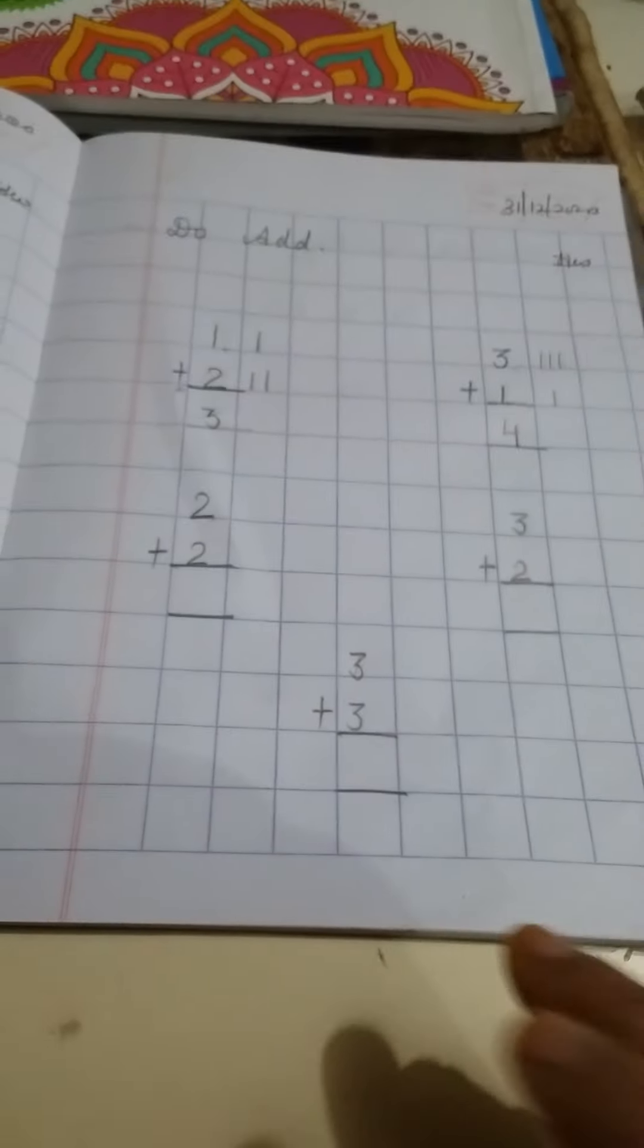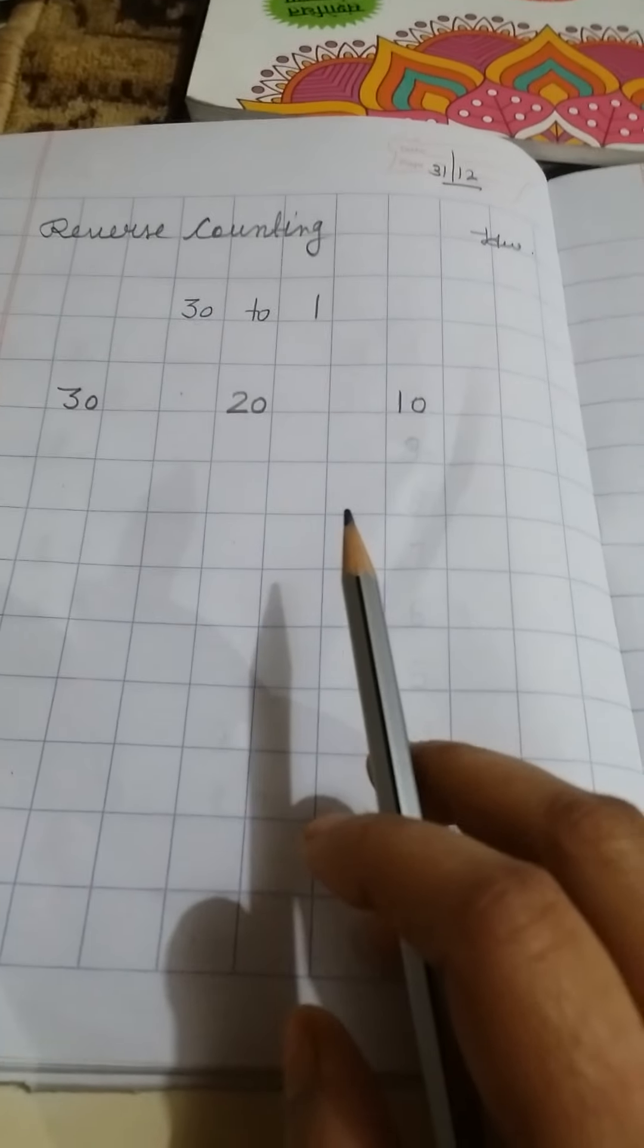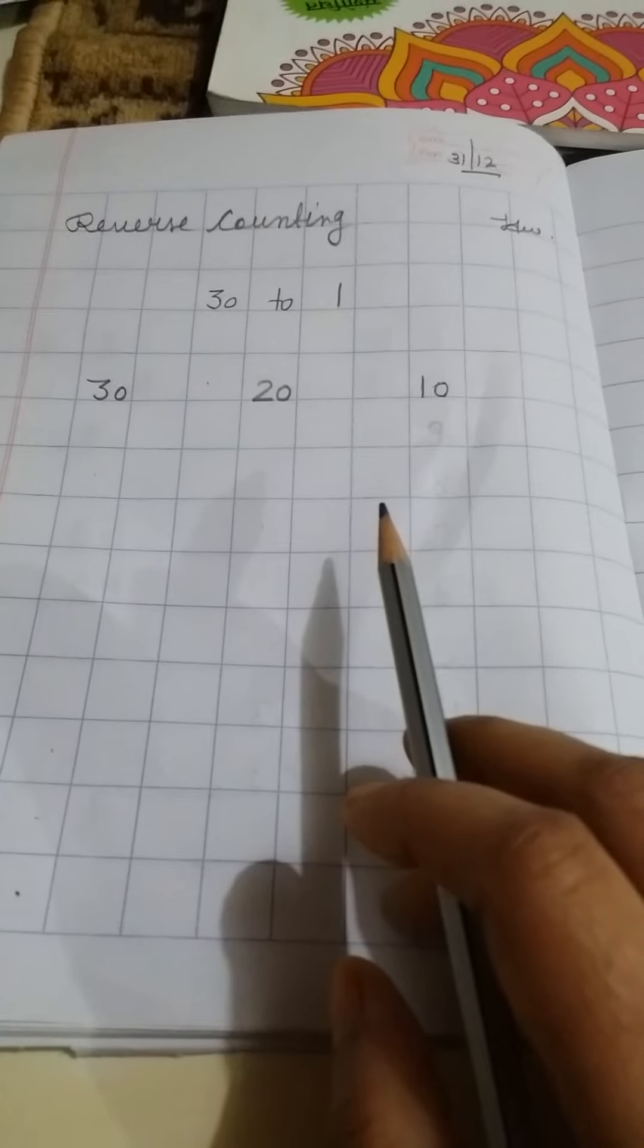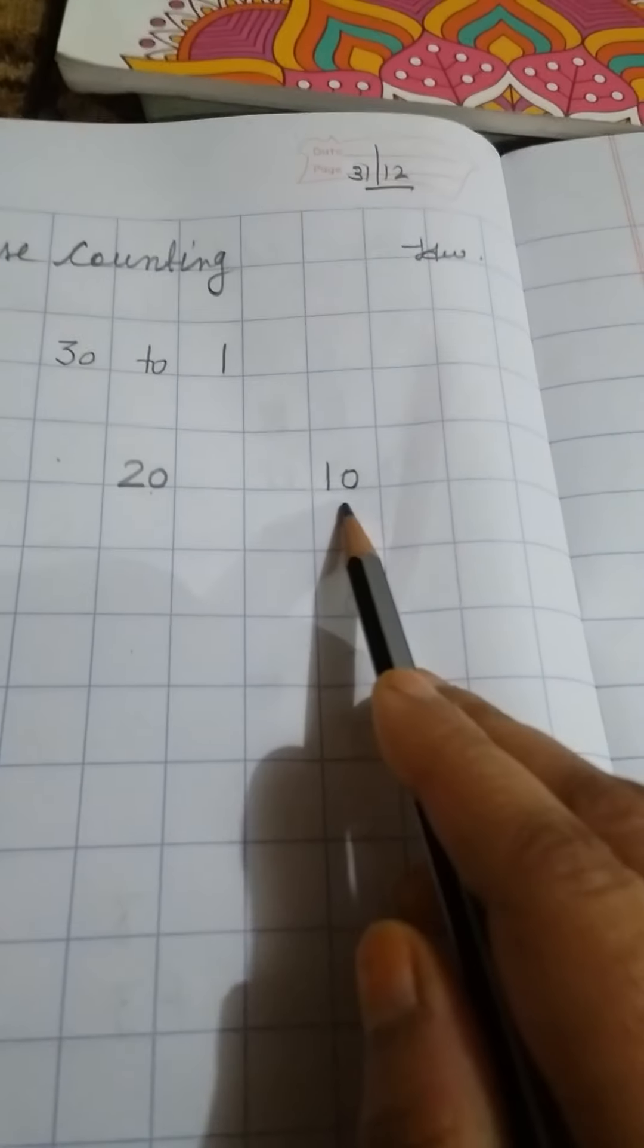Students, you have to do this work in your math notebook. Another work is reverse counting. Students, we have already done reverse counting. So today we are going to revise 30 to 1 reverse counting. We have already written 30, 20, 10.